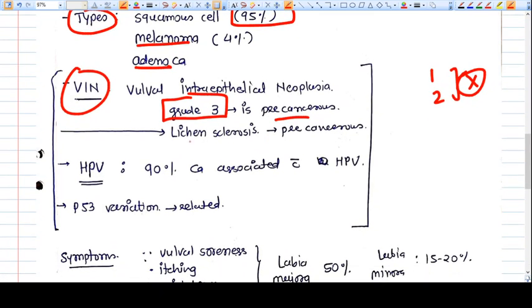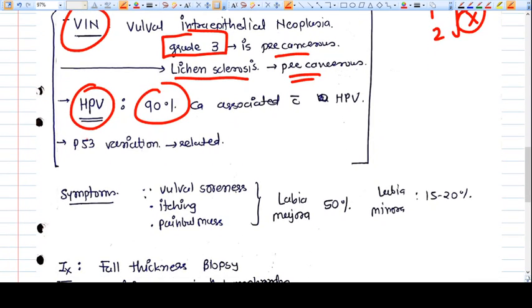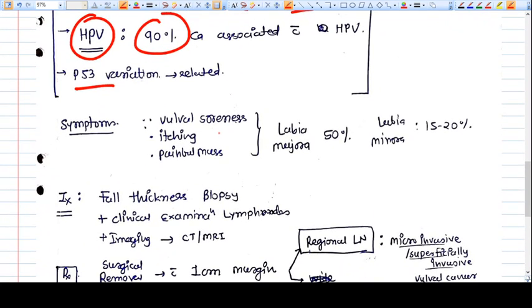Lichen sclerosis is also a precancerous lesion or precancerous condition for vulval cancer. HPV, human papillomavirus, is associated with 90 percent of vulval cancer. P53 variation is also related or associated with vulval cancer.